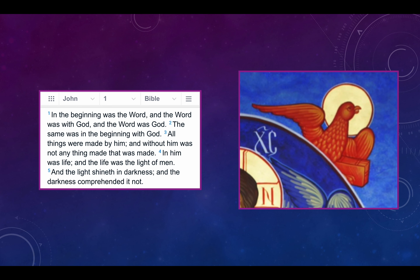Everyone agrees that the eagle represents John the Evangelist — the divine gospel. Look how it starts: 'In the beginning was the Word, and the Word was with God, and the Word was God. The same was in the beginning with God. All things were made by him, and without him was not anything made that was made. In him was life, and the life was the light of men, and the light shineth in darkness, and the darkness comprehended it not.' The beautiful prologue of the Gospel of John the Evangelist.